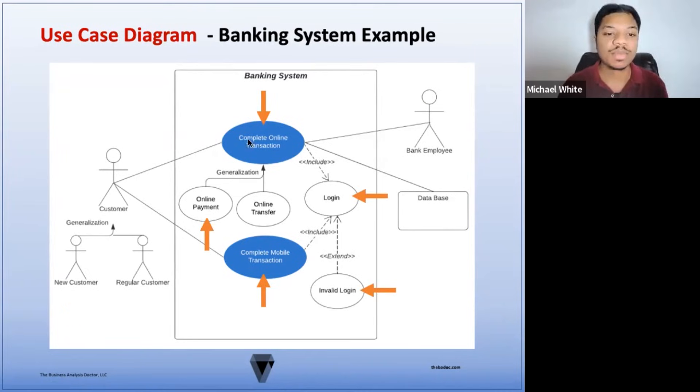Then we have our use cases. Our base use cases are complete online transaction and complete mobile transaction. And we also have several sub-use cases. The online payments and online transfers are two variations of the complete online transaction use case. Since this is a generalization relationship, they inherit the functionality and relationships of the complete online transaction use case. Then we have our login use case, which is an included relationship to both the complete online transaction use case and the complete mobile transaction use case. This means that both of these use cases require the login functionality in order to be successfully executed.